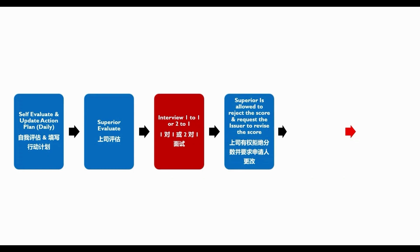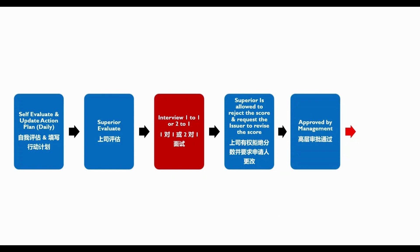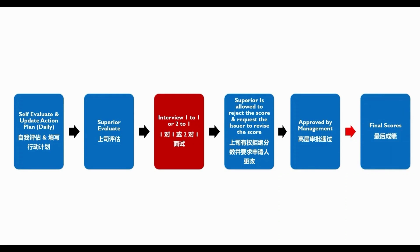If the superior cannot accept the score for a particular employee, they can request that the employee adjust the score because they disagree. After the score and comments are given, the whole process goes to top management — maybe a director — and this becomes the final score. That is the whole workflow process.